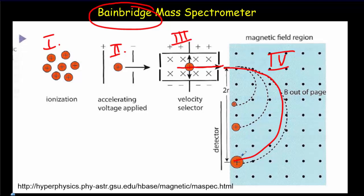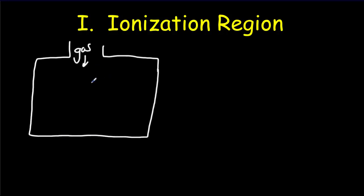Now let's look at each region in a little more detail. The first region is the ionization region where you have an elemental gas come into an evacuated chamber. At one end of that chamber you have what's called an electron gun.